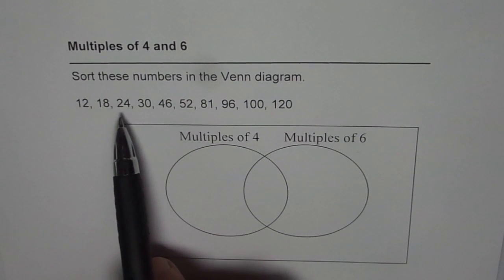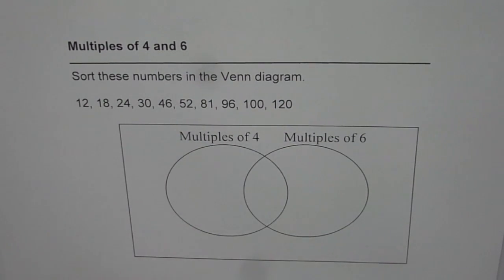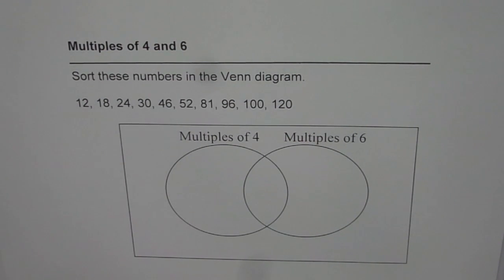The numbers are: 12, 18, 24, 30, 46, 52, 81, 96, 100 and 120. You need to write multiples of 4 and multiples of 6 in this Venn diagram. You can pause the video, answer the question, and then look into my suggestion.